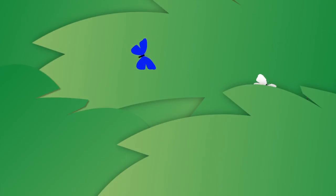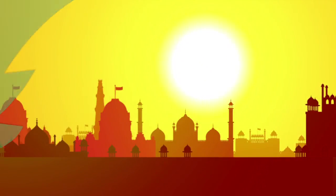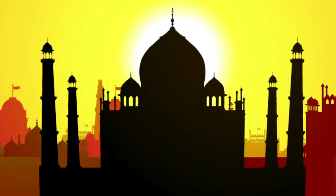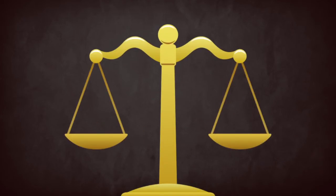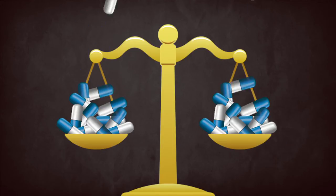But it doesn't have to be like this. Countries can design laws to stop evergreening from happening. Like India, for example. Their law means they can produce quality, affordable generic medicines for millions in developing countries.